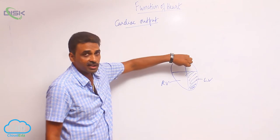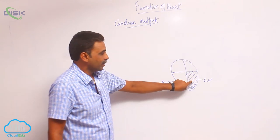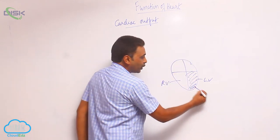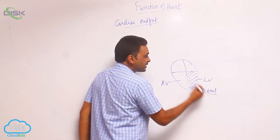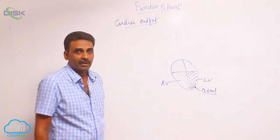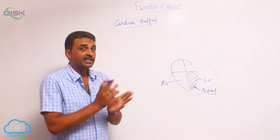Now we have 120 ml of blood present inside the ventricle. Each ventricle contains 120 ml.